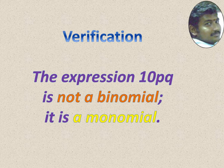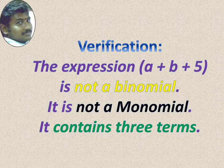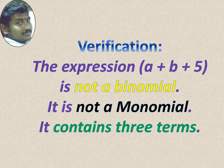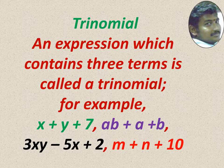See the terms — how many terms are there, and they should be unlike terms. The expression a plus b plus 5 is not a binomial, not a monomial, because it has three terms, all unlike. So it has three terms. An expression which contains three unlike terms is called a trinomial.